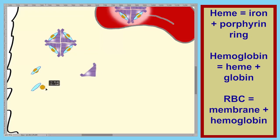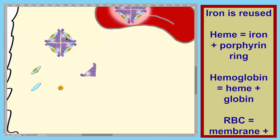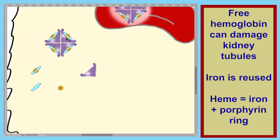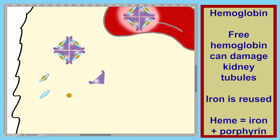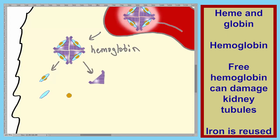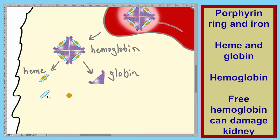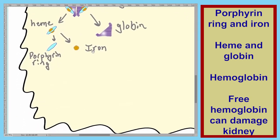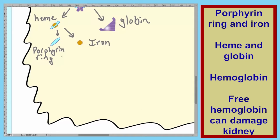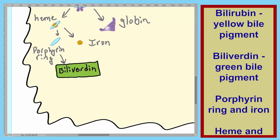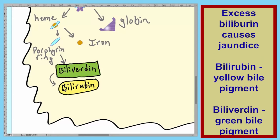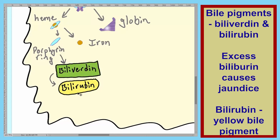Now we're going to separate the iron from the porphyrin ring. Since iron is so valuable, we can reuse it. Hemoglobin can be harmful to the body — it can damage the kidneys — so it must be disposed of very efficiently. The hemoglobin is broken down into heme on the left and globin on the right. The heme is broken down into the porphyrin ring and iron. The porphyrin ring goes through several steps: it is first broken down into a green pigment called biliverdin, and biliverdin is then broken down into a yellowish-green compound called bilirubin. Remember, bilirubin is the compound responsible for jaundice. These two pigments — biliverdin and bilirubin — are known as bile pigments.